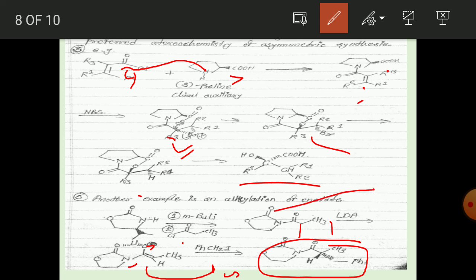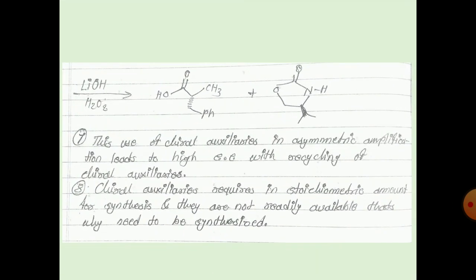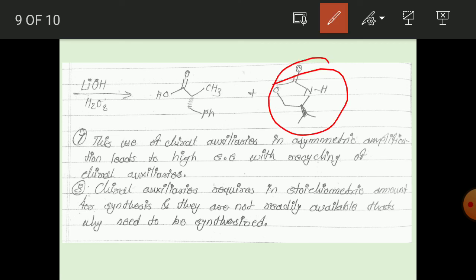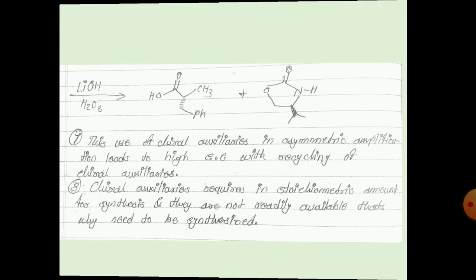In the next step, LiOH and H2O2 are used to remove the chiral auxiliary while recovering it intact for reuse. This is the use of chiral auxiliaries in asymmetric synthesis, which leads to high enantiomeric excess. Chiral auxiliaries are required in stoichiometric amounts and, if not readily available, need to be synthesized.